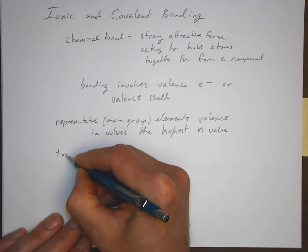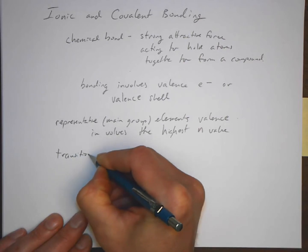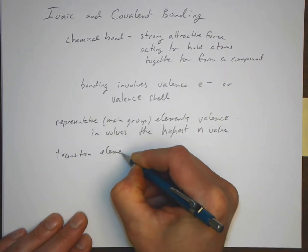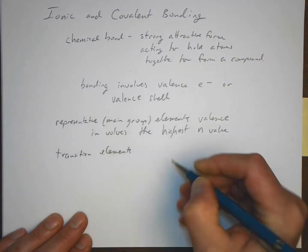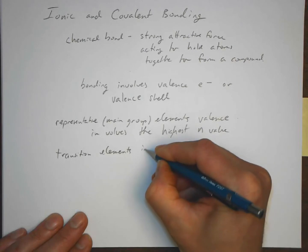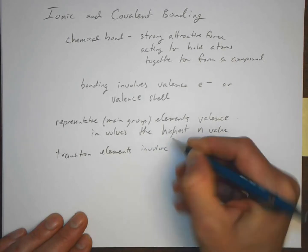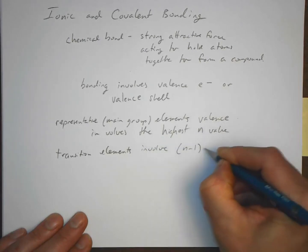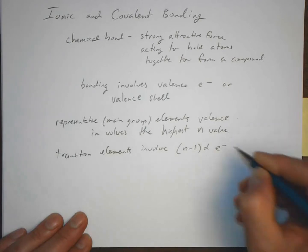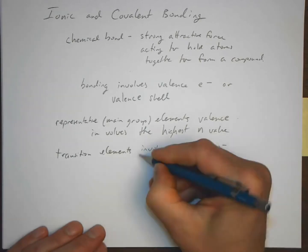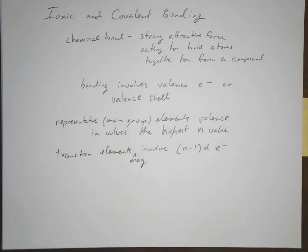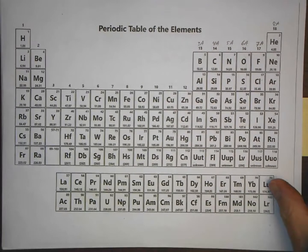For transition elements, just so that we have this, they are a little more complex and may involve the n minus 1d electrons. So I'm going to get a periodic table here and just look at this.